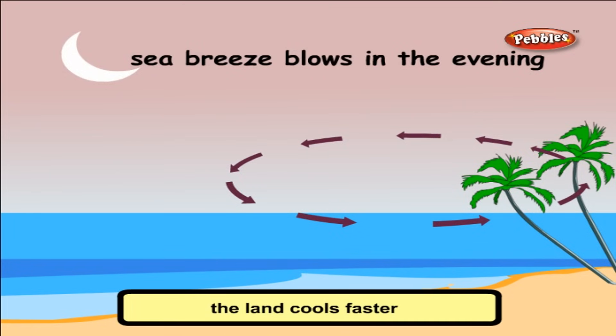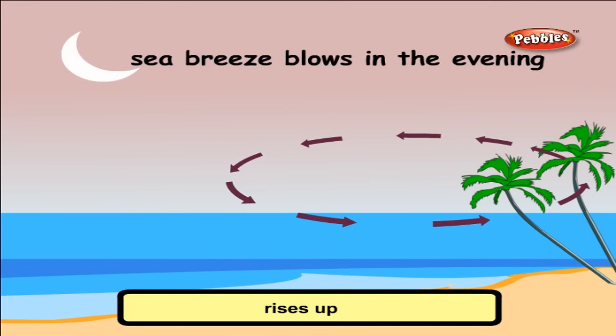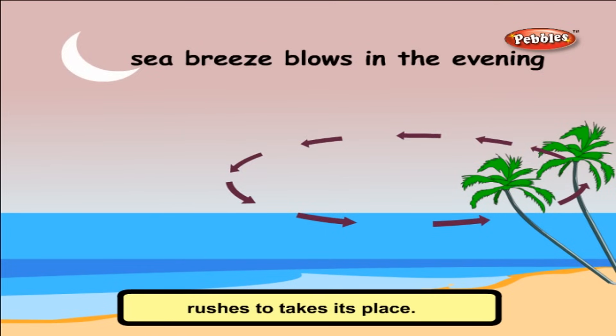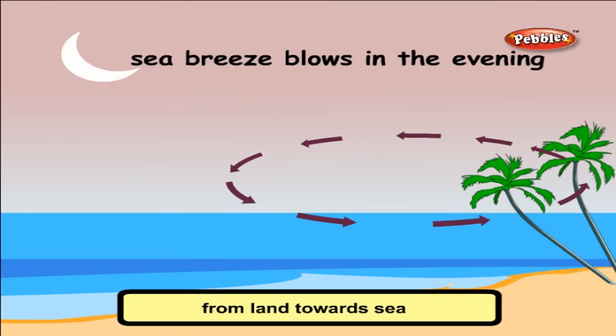At night, the land cools faster than the sea water. The warm air above the water rises up, and the cool air above the land rushes to take its place. This blow of air from land towards sea is called the land breeze.